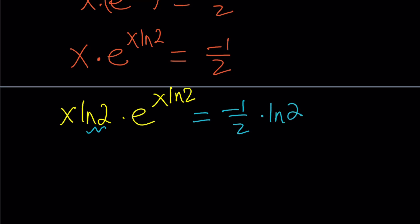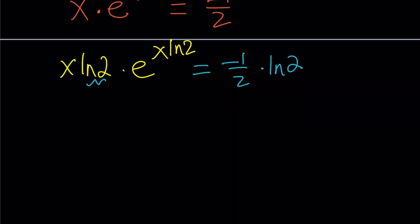Now is a good time to Lambert both sides. You may want to work a little bit on the right-hand side. Let's go ahead and finish that up, and then we'll Lambert both sides. How can I put negative 1 half ln 2 in the t e to the t form?